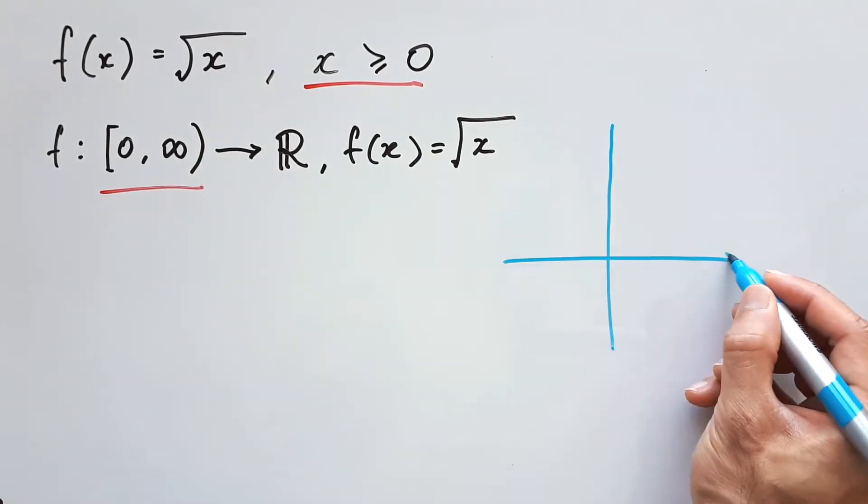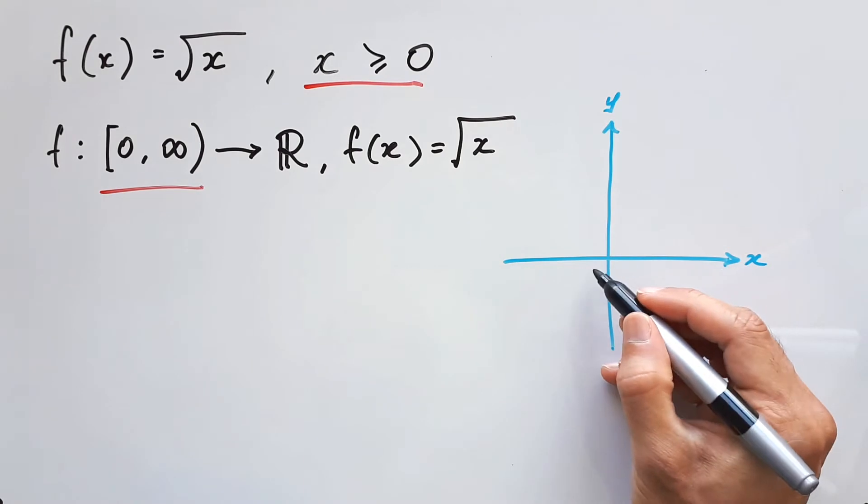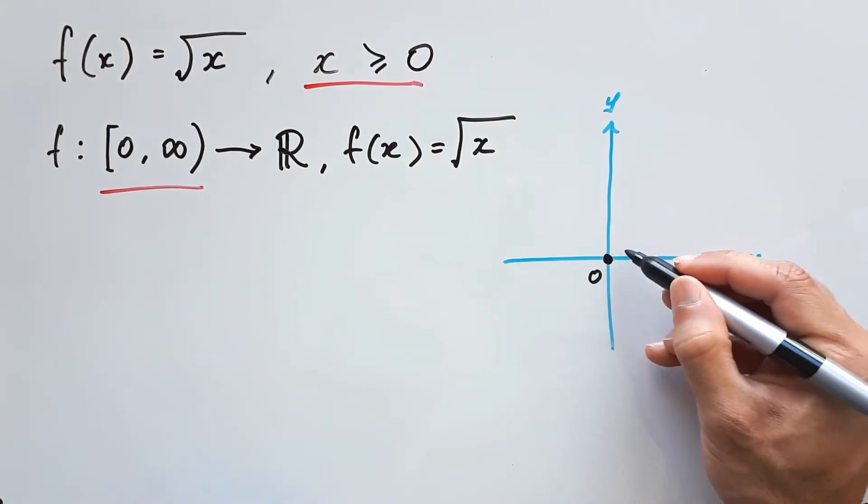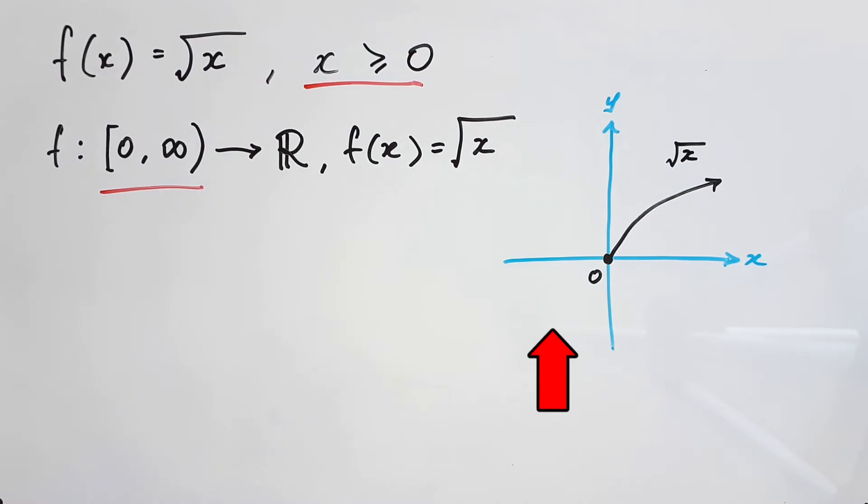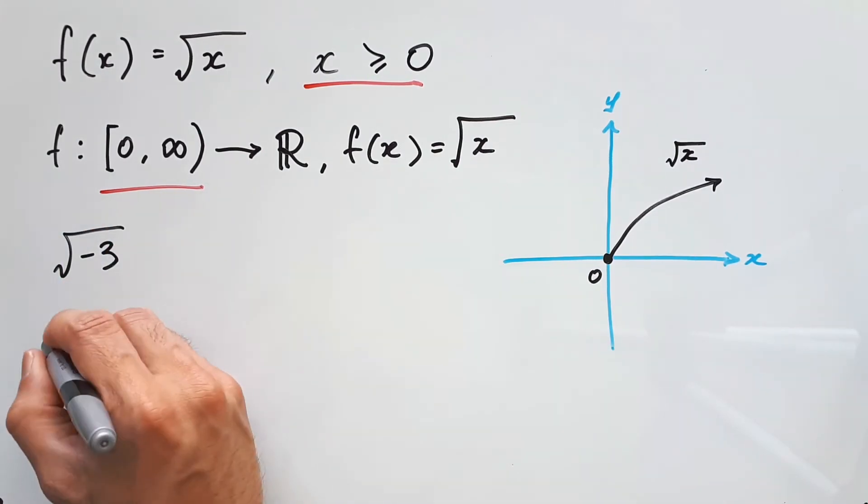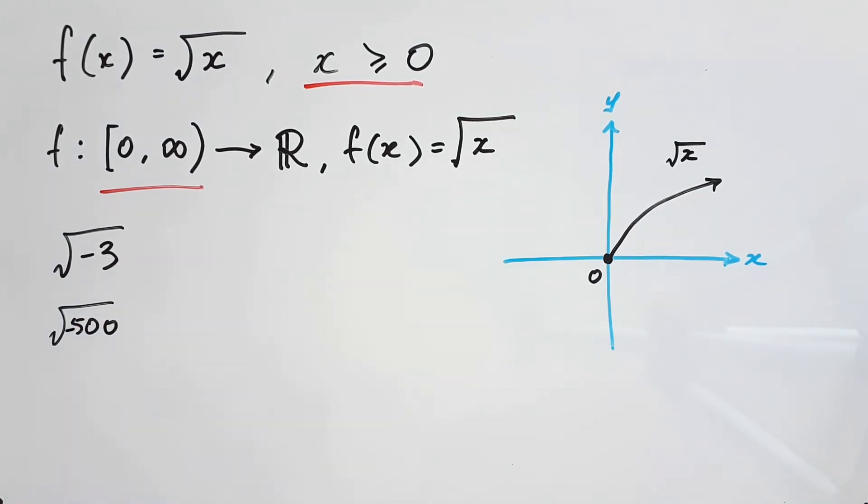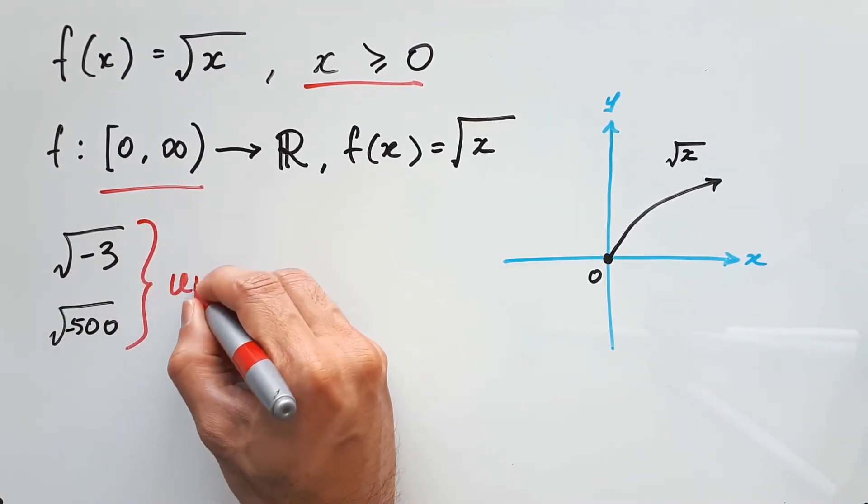And when we draw this out on a graph, we can see that the square root x function starts from the origin and rises slowly towards the right. And there's nothing on the left side of the y-axis, because when you take the square root of a negative number, like negative 3 or negative 500, they won't have any value. It's what we would call undefined.